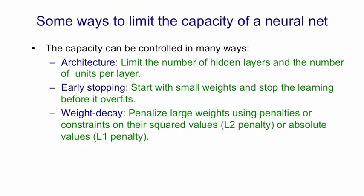A very common way to control the capacity of a neural network is to give it a number of hidden layers, or units per layer, that's a little too large, but then to penalize the weights, using penalties or constraints on the squared values of the weights or the absolute values of the weights.